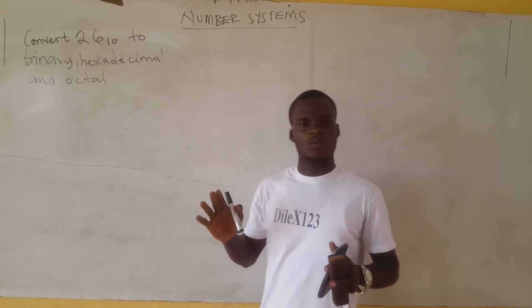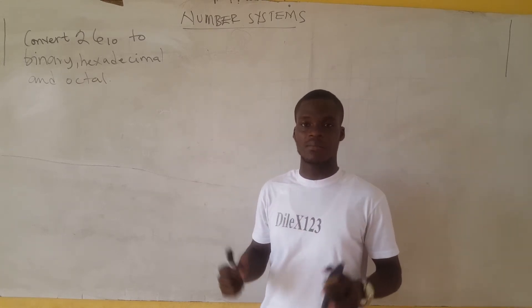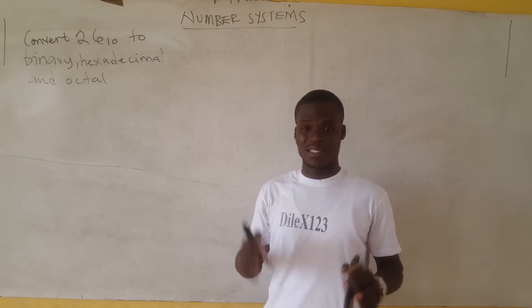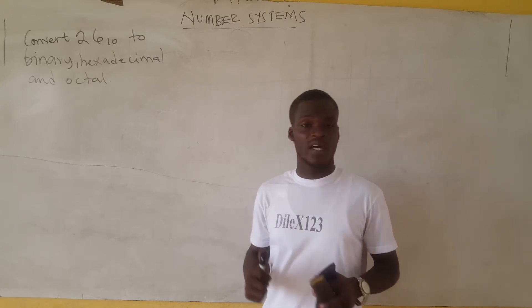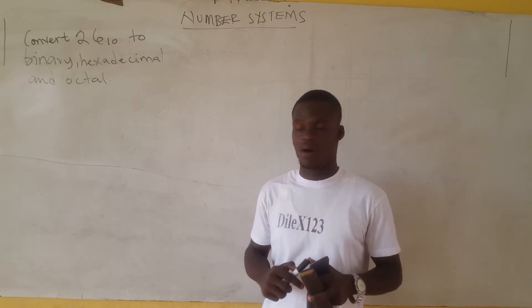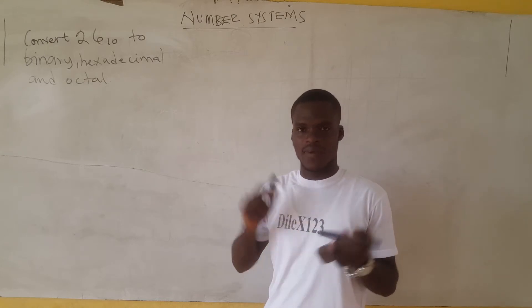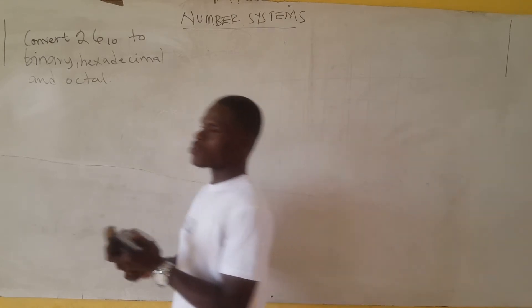We have a question: we should convert 26, which is in base 10 — that is in the decimal notation — to binary, hexadecimal, and then octal notation. This is very simple; let's quickly do this.